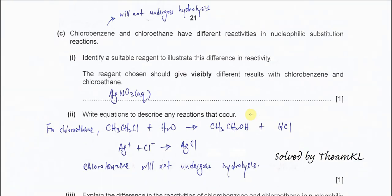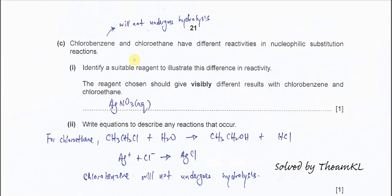Part C: Chlorobenzene and chloroethane have different reactivities in nucleophilic substitution reactions. This one most likely is about the hydrolysis. The best example is hydrolysis, and you also learn this in AS.